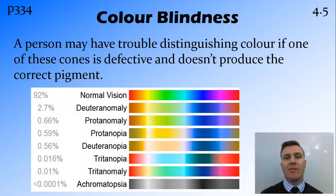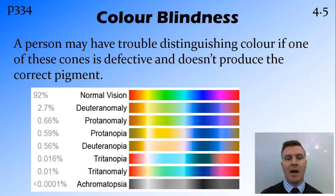If for some reason one of these cones isn't producing the correct photosensitive pigment, we say that we are colour blind and we lose the ability to distinguish between particular colours. And there are multiple different types of colour blindness, depending on which cones aren't working correctly and the way in which they're not working correctly.